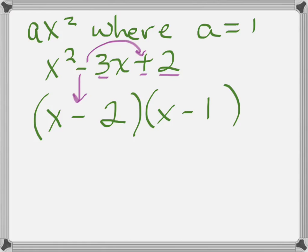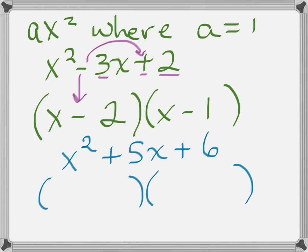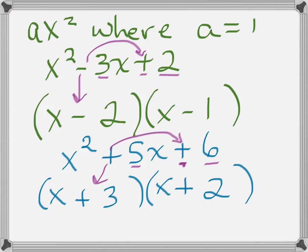We always put the larger number in the first binomial. Let's look at another example: x squared plus 5x plus 6. Two binomials, x times x. Bring down the first sign — it's a plus. Positive times a positive is another positive. Now we're looking for two numbers that multiply to give 6 and when added give 5. That would be 3 and 2.